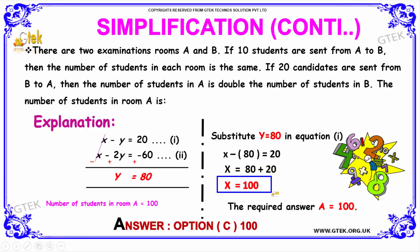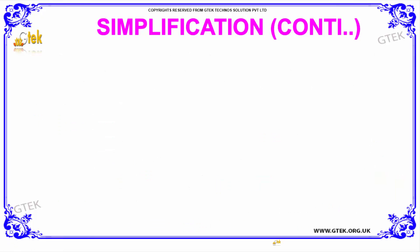The required answer is 100. There are 100 students in room A. Therefore, option C, 100, is the answer.